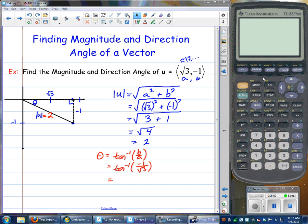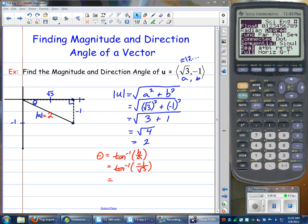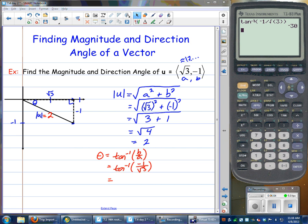Make sure your mode's in degrees. So we would go tangent inverse of -1 divided by the square root of 3. Don't forget to close out your parentheses there. Hit enter, and there is theta. It's -30 degrees. So this angle right here would be -30.